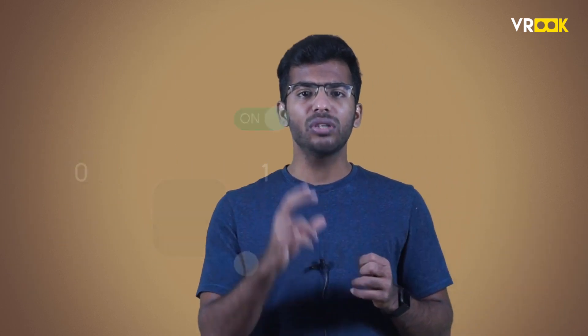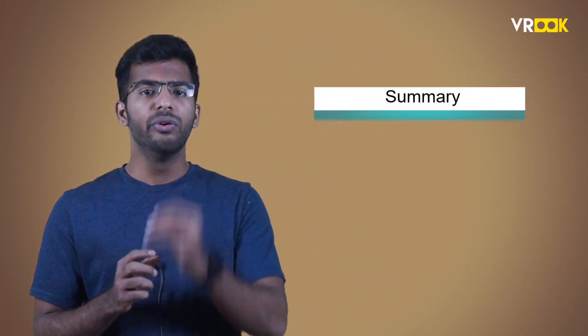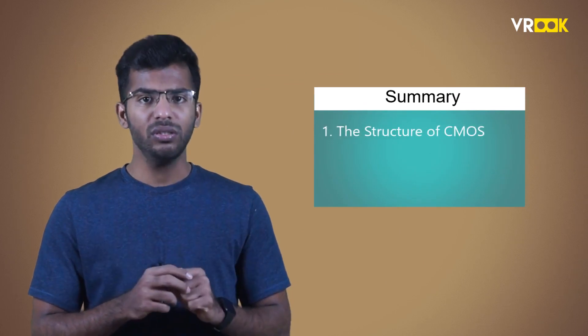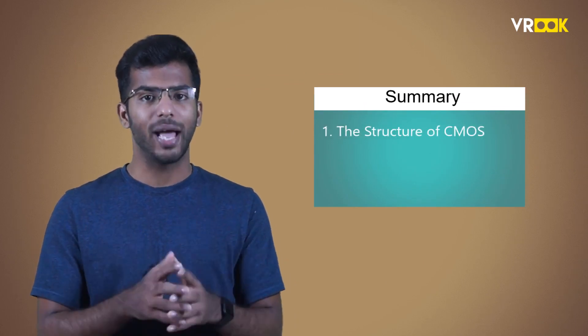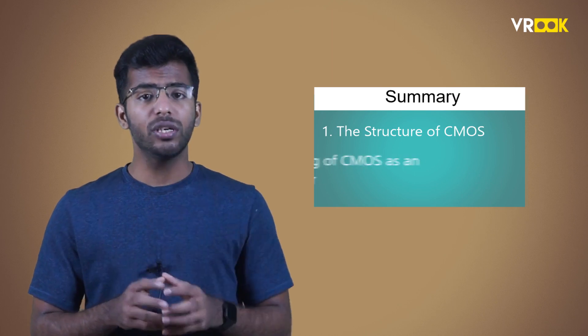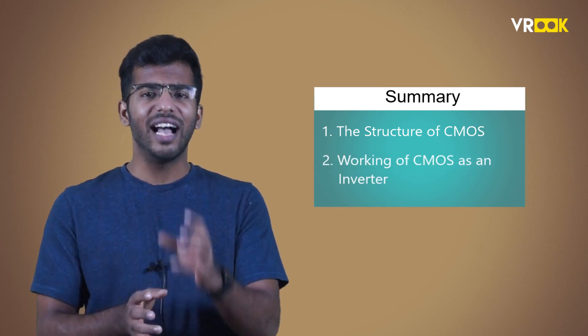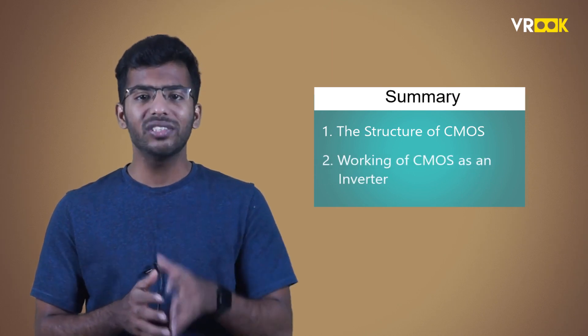This is how CMOS works as an inverter and helps in many applications. To sum up, in this video, we learnt the structure of CMOS which has PMOS and NMOS together and also understood how CMOS works as an inverter when the logic is 0 or high. In the next video, we will look at another interesting device, silicon controlled rectifiers.